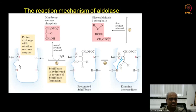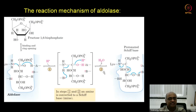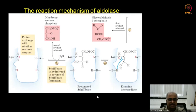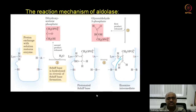Glyceraldehyde-3-phosphate is released, and the amine intermediate remains temporarily attached to the active site. Then the base catalysis group acts as an acid, donating a proton, switching the double bond and forming a hydroxyl group — the reverse of what happened in step one and two. Hydrolysis releases dihydroxyacetone phosphate, and the enzyme is restored through solvent-based proton exchange. This is how fructose-1,6-bisphosphate is cleaved into glyceraldehyde-3-phosphate and DHAP.